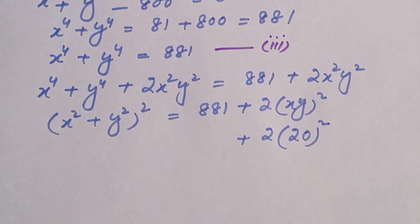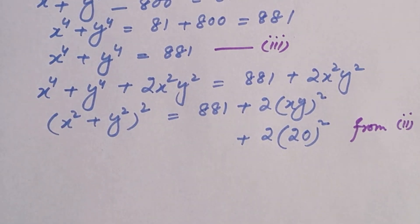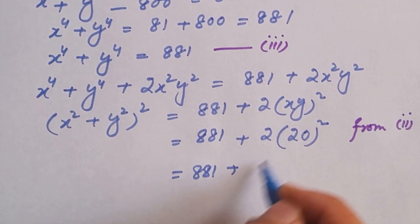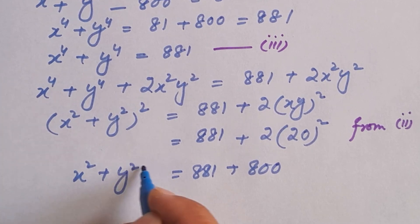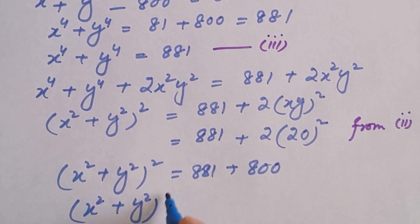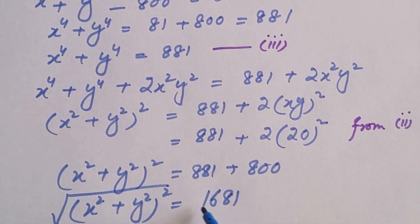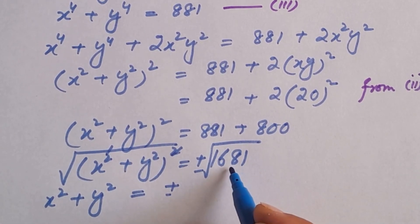We plug in the value of xy which is 20 from equation 2. So the right-hand side becomes 881 plus 2 times 20 squared, which is 881 plus 800, equal to 1681. Therefore (x squared plus y squared) whole squared is equal to 1681. Taking the square root of both sides, the square and root cancel out, and we are left with x squared plus y squared is equal to plus or minus 41.